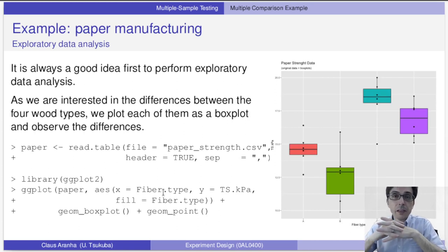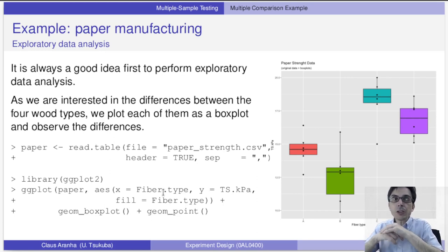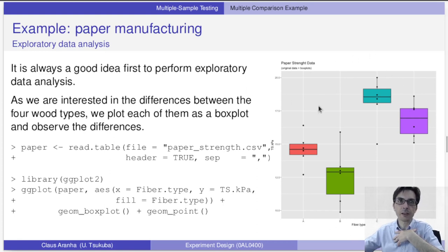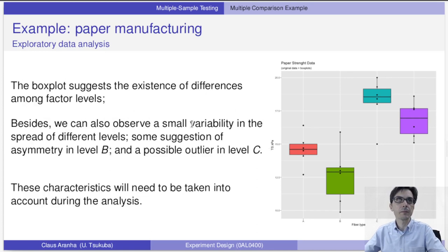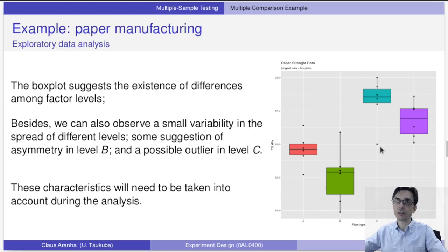Before doing any tests, it's always important to first examine the data. We generate six boxes of paper for each material and measure their tensile strength. The data looks something like this: on the horizontal axis we have the fiber type; on the vertical axis, the strength. We see red, green, blue, and purple groups. We can already see that there seems to be some difference based on the type of paper, though we don't know yet if this difference is significant or just due to chance. The boxplot suggests differences among factors; type B shows bigger variability, type A very small variability, and type C may have an outlier to deal with.